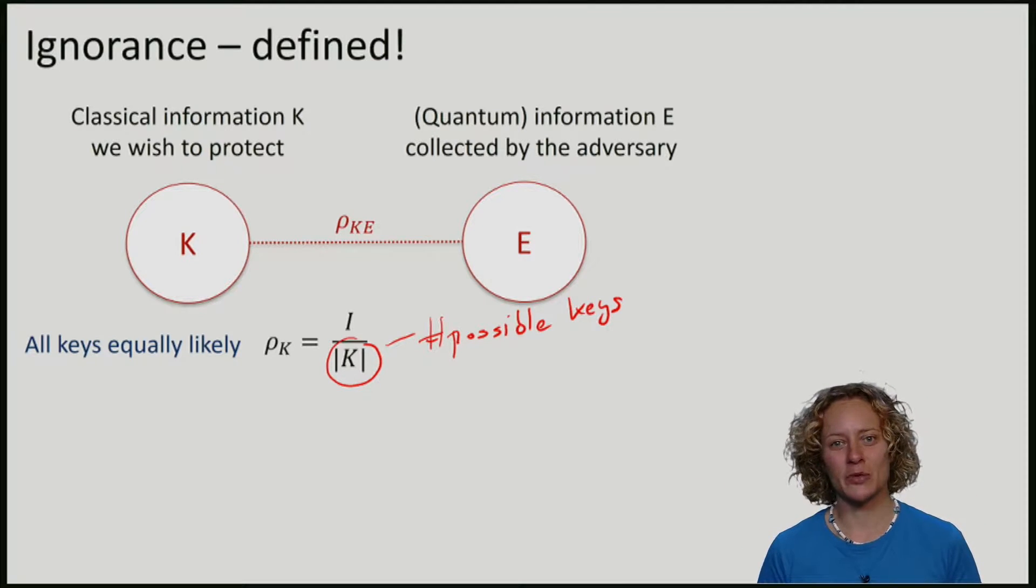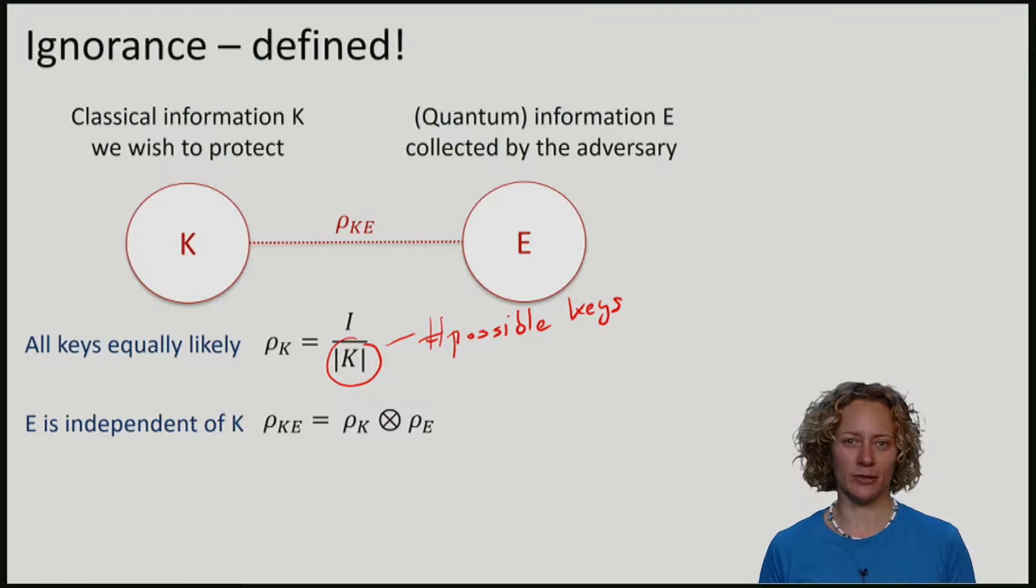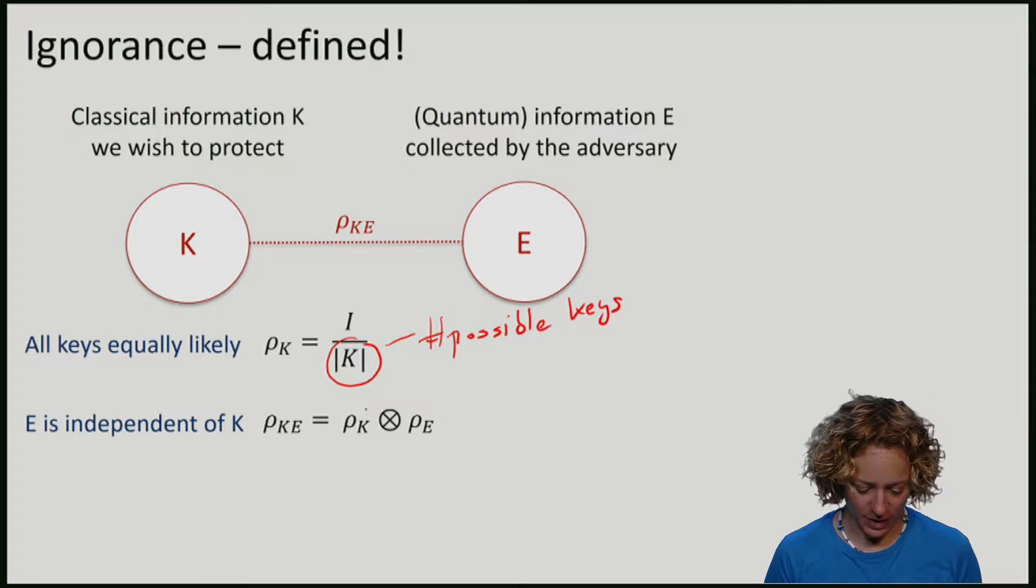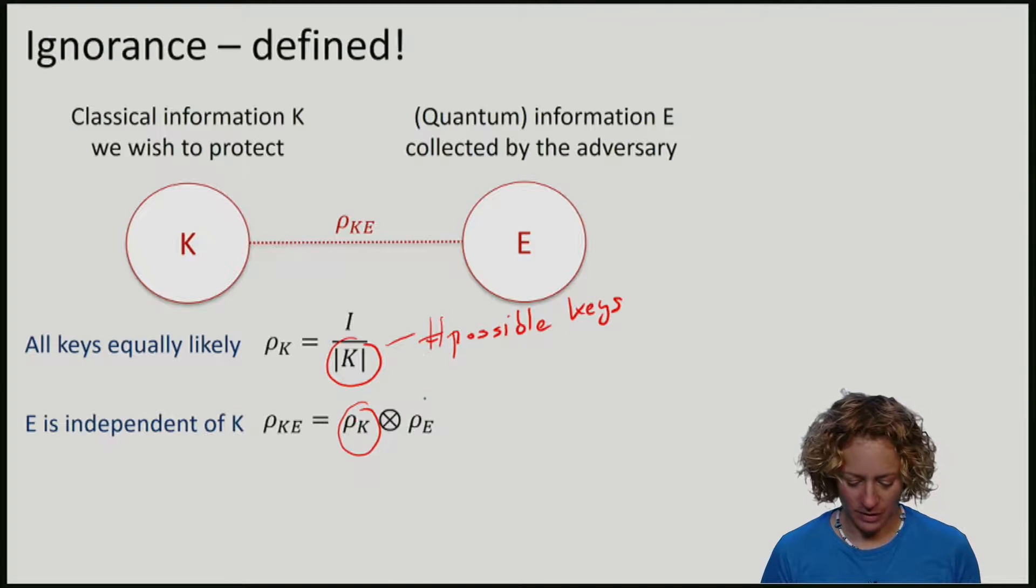So in addition, we want that E is independent of K. Formally, this means that the state ρKE is a tensor product of some states on K and some states on E.